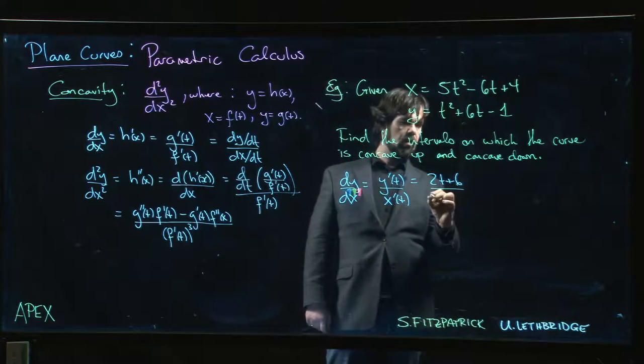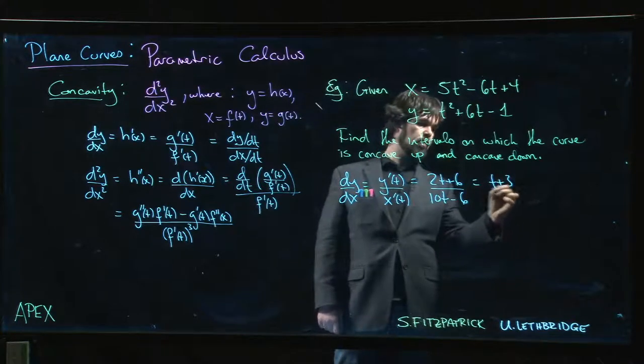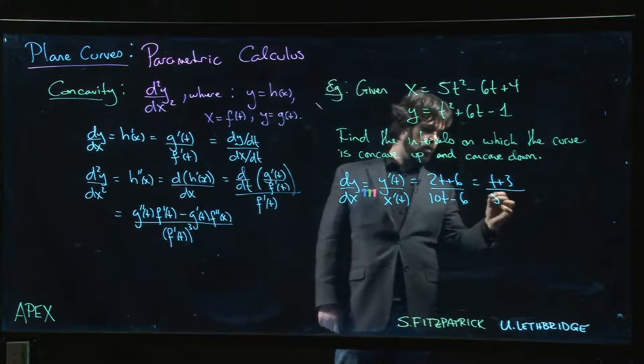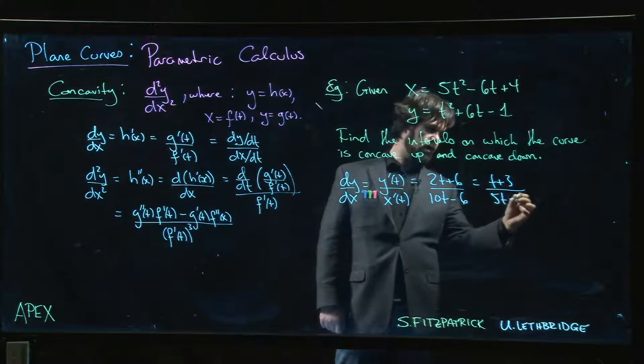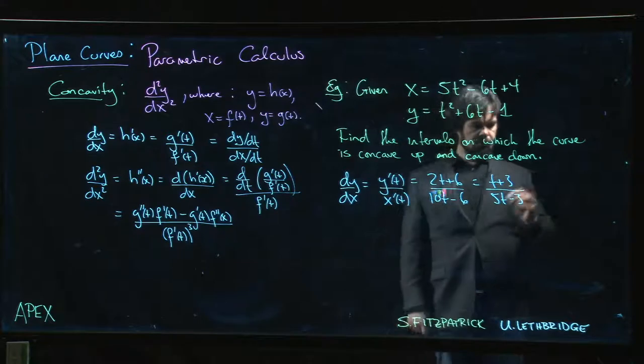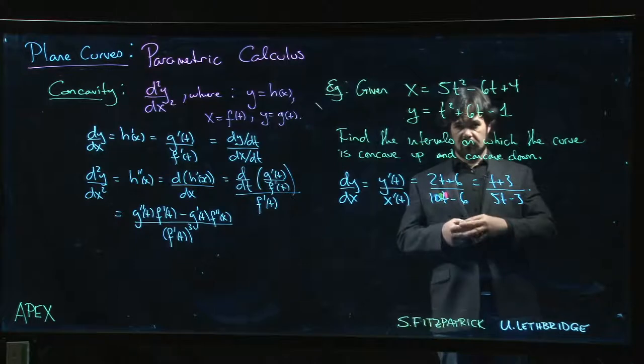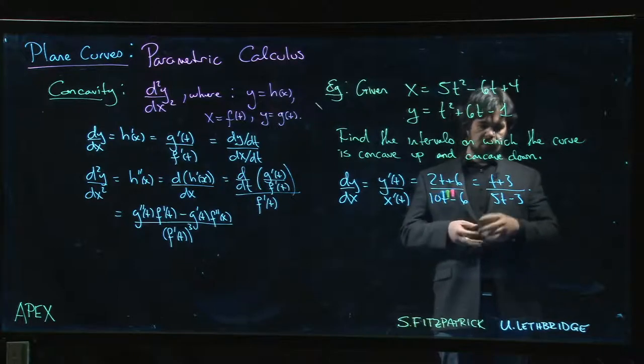So we have 2t plus 6 over 10t minus 6, or t plus 3 over 5t minus 3. And so then we already saw a couple things about that—we saw that we had a horizontal tangent at t equals minus 3, vertical tangent when t is 3 over 5.